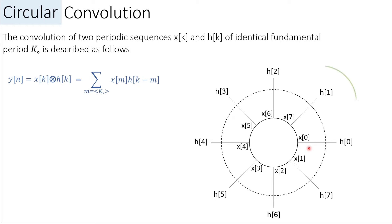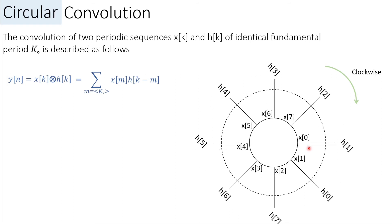Then we rotate the outer circle in the clockwise direction and multiply all new pairs again — x[0] with h[1], x[1] with h[0], x[2] with h[N-1], and so on. We add those products to get the second point of y[n]. For the third point we rotate again, then for the fourth we rotate again, and we keep doing this until we complete the full fundamental period k₀.